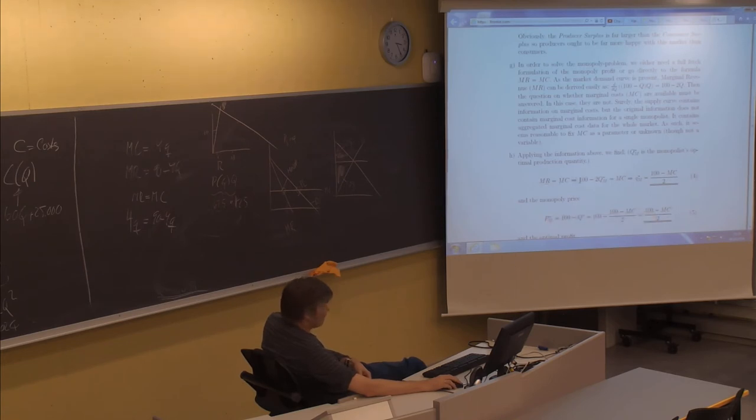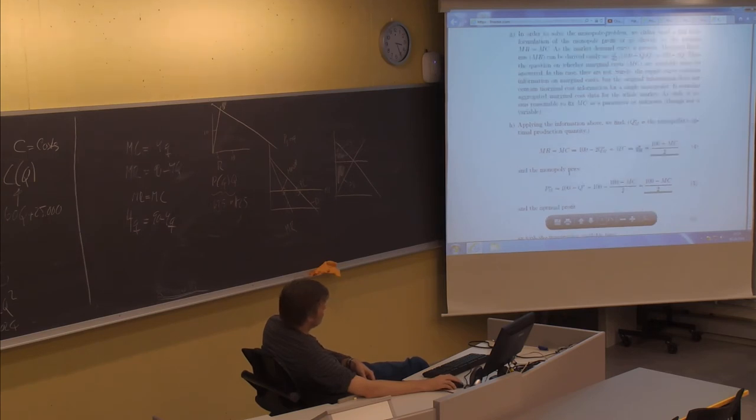Of course, we start by marginal revenue equals marginal cost. We have the marginal revenue curve. It looks like this. But then we just put in something for the marginal cost. I call it MC here to denote marginal cost. Then of course, I can compute the optimal quantity by solving this equation with respect to Q_M star, where MC is a parameter. Then it turns out to be (100 minus MC)/2 by this simple equation. Then I can enter it into the demand curve to find the price. I have the demand curve as P_M equals 100 minus Q. And I just put that quantity into this equation instead of Q star to get an expression for the monopoly price. So the monopoly price turns out to be (100 plus MC)/2.